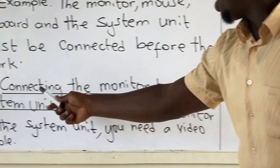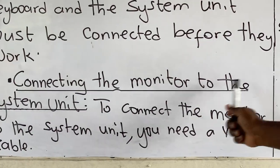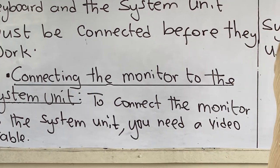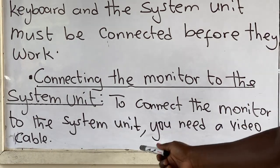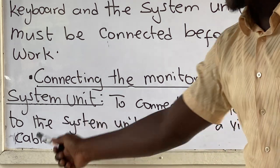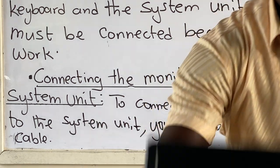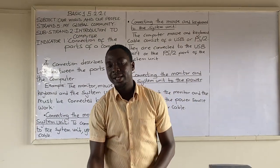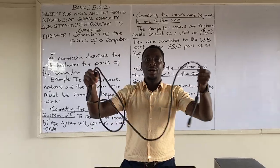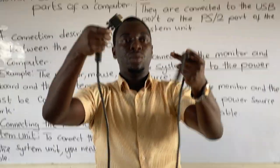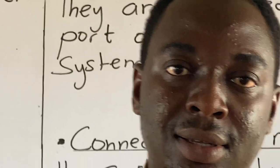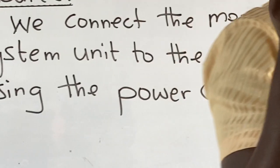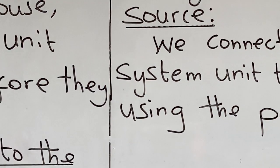Let's look at connecting the monitor to the system unit. To connect the monitor to the system unit, you need a video cable. This is a video cable — you can look at the two ends. We are going to connect the monitor to the system unit using the video cable.